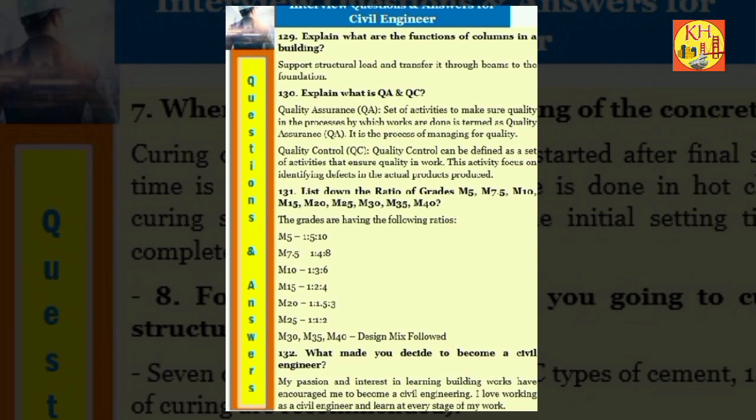Question 132: List down the ratio of grades M5, M7.5, M10, M15, M20, M25, M30, M35, M40. The grades are having the following ratios: M5 1:5:10, M7.5 1:4:8, M10 1:3:6, M15 1:2:4, M20 1:1.5:3, M25 1:1:2, M30, M35, M40 design mix. Question 133: What made you decide to become a civil engineer? My passion and interest in learning building works have encouraged me to become a civil engineer. I love working as a civil engineer and learn at every stage of my work.